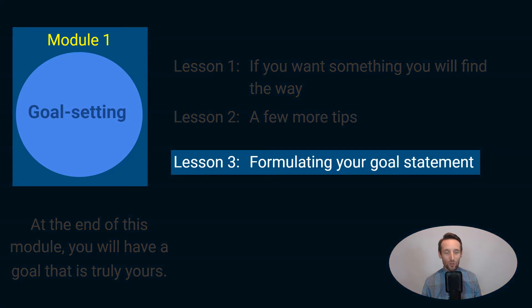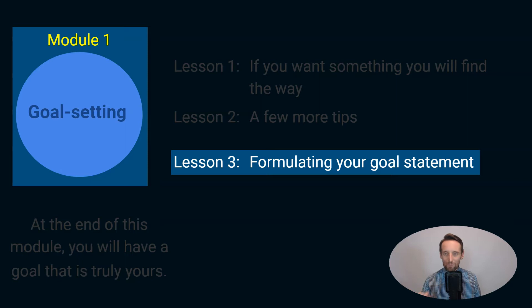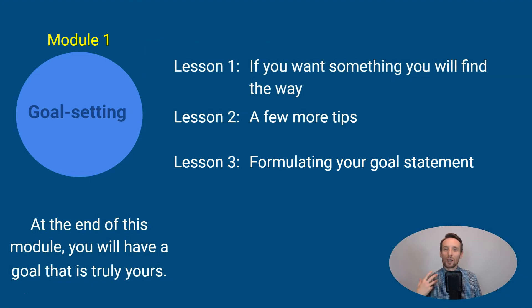Lesson three: formulating your goal statement. You will learn about the SMART model. You might have heard about it because it's pretty well known, but this model has one potential weakness that is definitely worth knowing. At the end of this module you will have a goal statement that is truly yours. And since you know where you're going, we can start thinking about the skills and resources that will be needed to accomplish your goal.